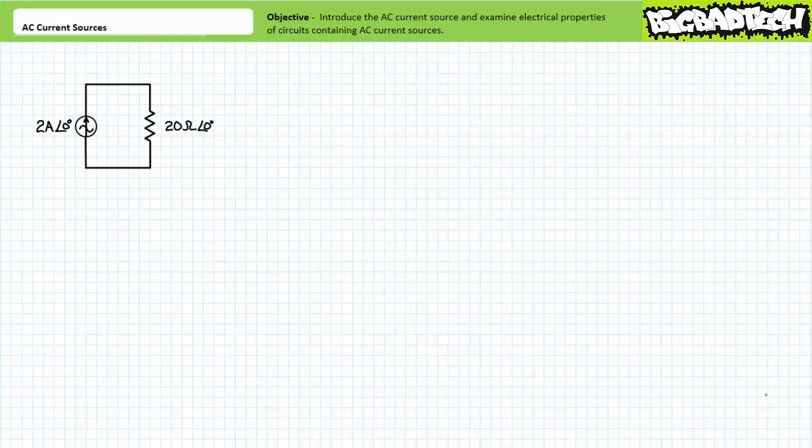Good day and welcome to Big Bad Tech. I'm your instructor Jim Pytel. Today's topic of discussion is AC current sources. Our objective is to introduce AC current sources and perform circuit analysis using AC current sources. Additionally, we'll discuss rules and regulations regarding AC current sources and the limitations of real world AC current sources.